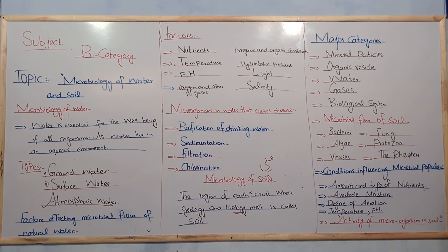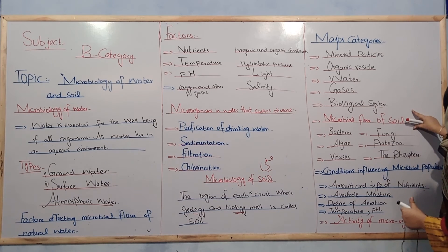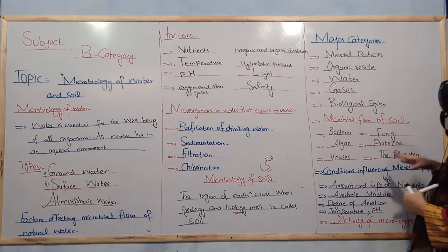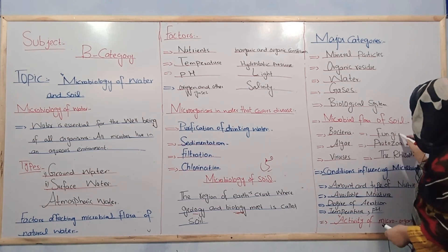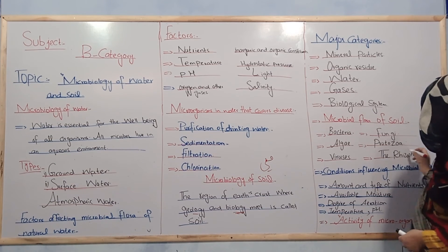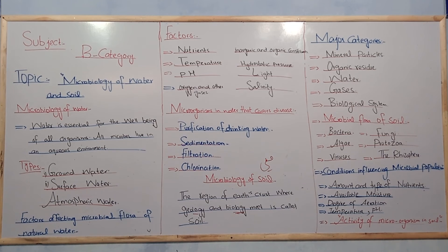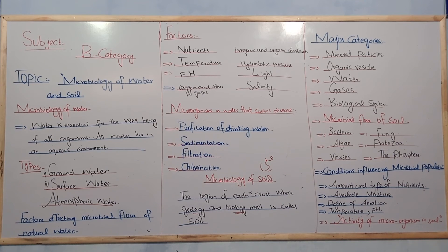The microbial flora found in soil includes bacteria, algae, protozoa, viruses, and organisms in the rhizosphere. Bacteria have the highest population. Regarding fungi, fungi are the most abundant near the surface, and in anaerobic conditions they prevail deeper down. Fungi are active in decomposing plant tissues and cellulose.